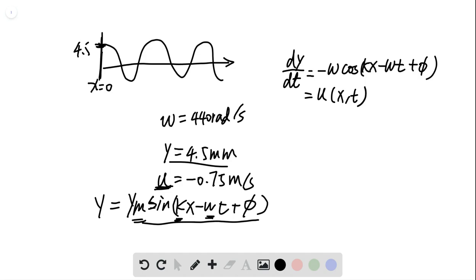So if we divide the displacement by the velocity, that is, if we divide y over u, so both we have y and we have u at x equals 0 t equals 0. So when we divide them, we divide them and ym will cancel and we are left with negative tangent kx minus omega t plus phi over omega.